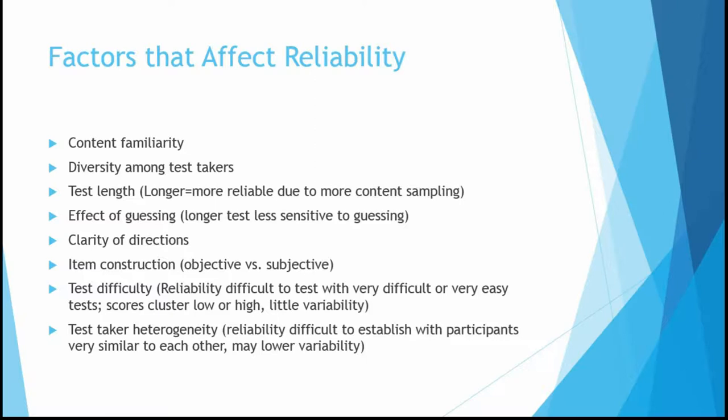The clarity of directions is also important. If you don't understand what you're supposed to do on a test, it may not perform reliably. I've been amazed at times when someone gives an instrument without explaining which direction their Likert scale runs — you don't know whether 1 or 5 is 'strongly agree.' That obviously has big effects on reliability. Item construction — how the test is put together — also makes a difference, and I've already discussed the differences in reliability between objective versus subjective items.